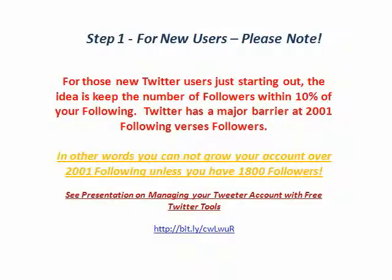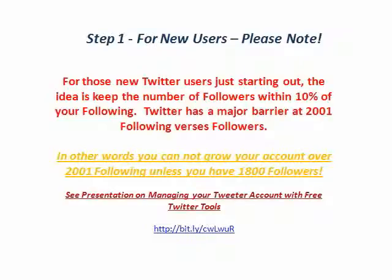Step 1 for new users: please note there is a barrier when you first start out. You'll see this many times as you try to add followers. That barrier is at 2,001 — you have to be within 10% of that. You're not going to be able to add followers if you have 2,001 following and only 1,200 followers. Twitter will not allow you to add followers when you hit that barrier. The way to manage that is to see another presentation I did about managing your Twitter account with free Twitter tools — you can access that by clicking on the link provided.